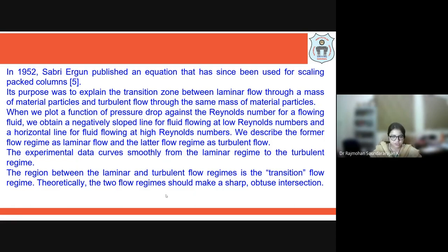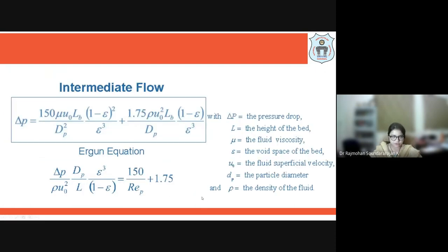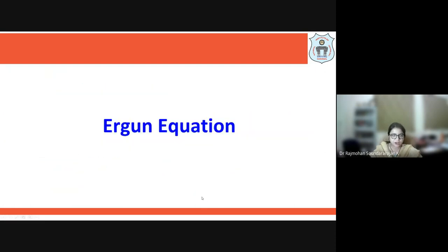The region between the laminar flow regime and the turbulent flow regime contains the transition flow regime. Theoretically, the two flow regimes should make a sharp obtuse interaction. After this, we will learn about the Ergun equation.